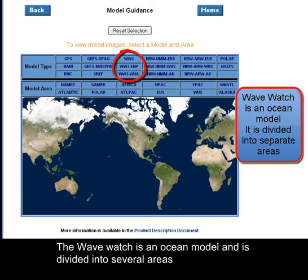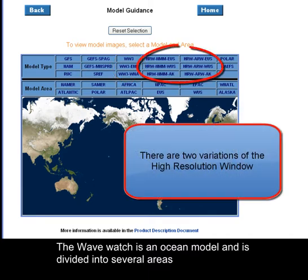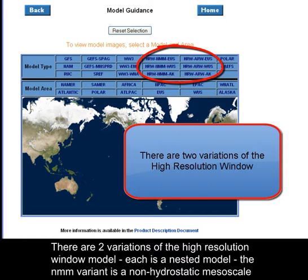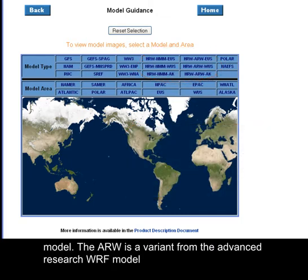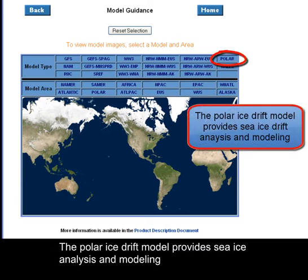The Wave Watch is an ocean model and is divided into several areas. There are two variations of the high resolution window model, each being a nested model. The NMM variant is a non-hydrostatic mesoscale model, and the ARW is a variant from the Advanced Research WRF model. The Polar Ice Drift model provides sea ice analysis and modeling.